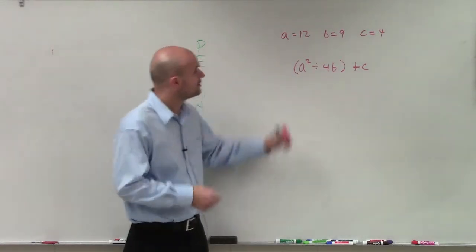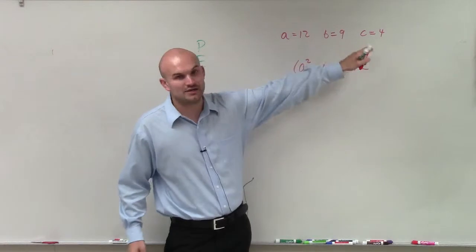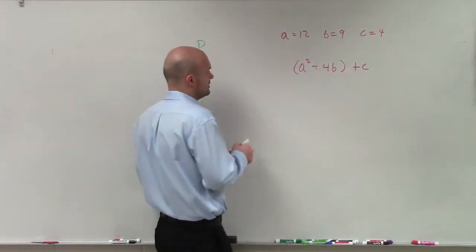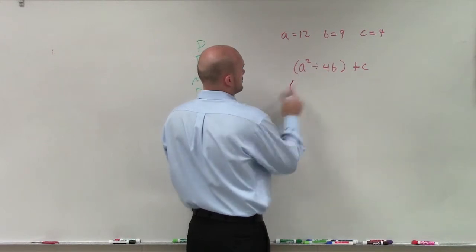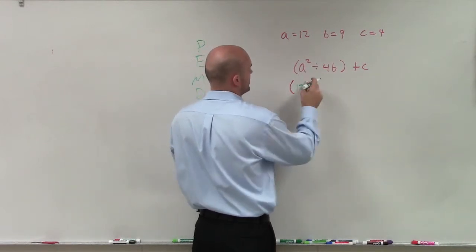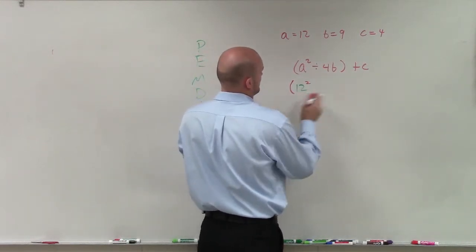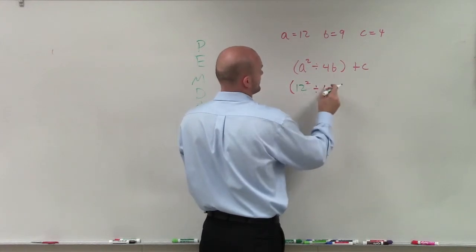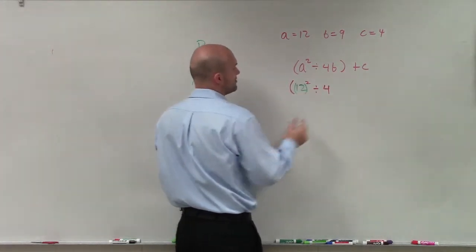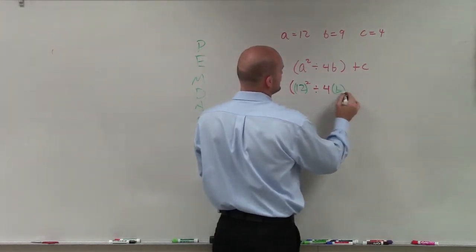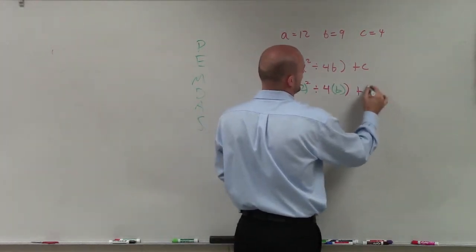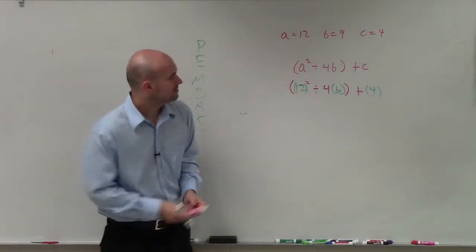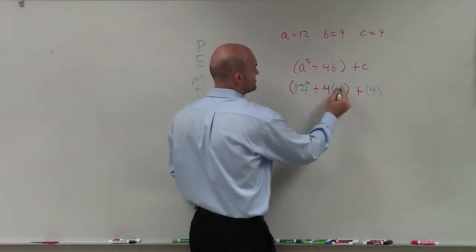So the first important thing we want to do is plug in the values for my a, b, and c. So therefore, I have 12 squared divided by 4. And what I'm going to do is whenever I plug them in, I like to put them around parentheses just so I can remind myself that that's what I plugged in for each value. I don't know why I put the b back in there. That's supposed to be a 9.